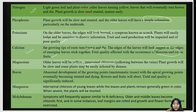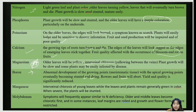For magnesium, all leaves turn yellow and there is interveinal chlorosis — yellowing between the veins. Plant growth will be slow and some plants may be easily infested. For boron, there is abnormal development of growing points and meristematic tissues, with apical growing points becoming stunted and dying. There is also abortion of fruit, and yield and quality are significantly reduced.